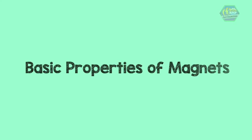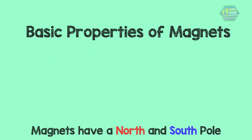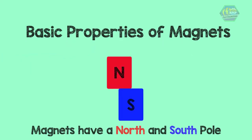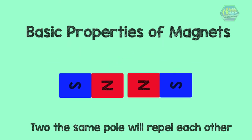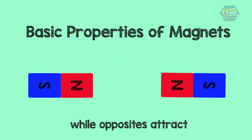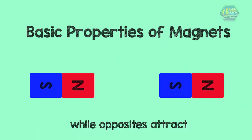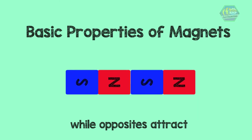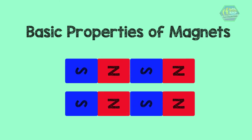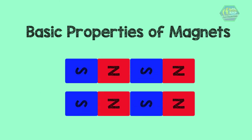Now let's discuss the basic properties of magnets. Magnets have a north and south pole. Two of the same pole will repel each other, while opposites attract. Sometimes magnets have more than one set of poles, but they always come in pairs. That is why no matter how many times you cut a magnet in half, it will always contain both poles.